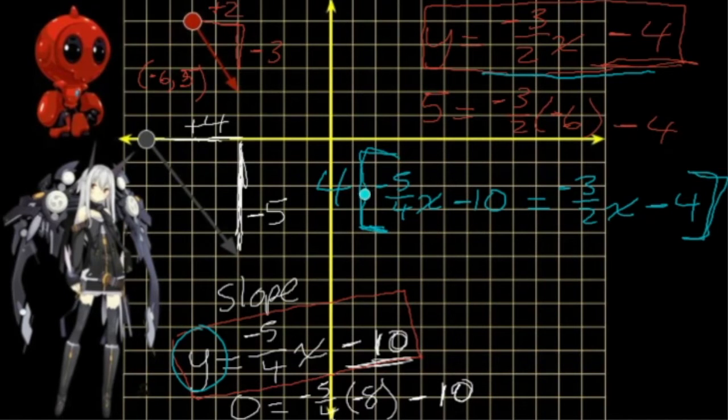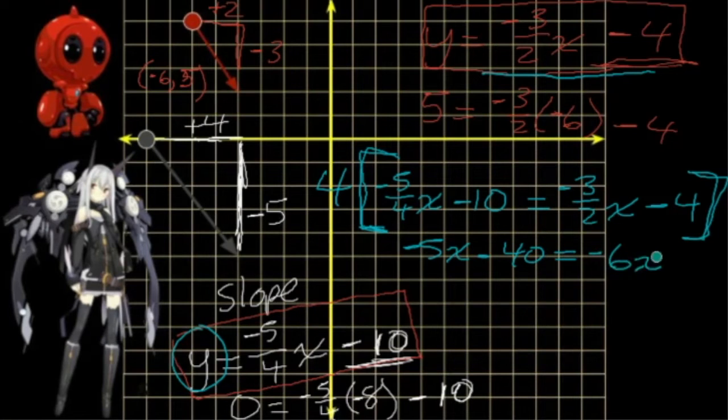I'm going to multiply everything by four. Every term by four. So we got negative five x minus 40 equals negative six x minus 16. I'm going to bring my negative six over here, so we'll have x equals. And I'll bring my negative 40 over there. Add 40 to both sides. We got 24. x is 24.